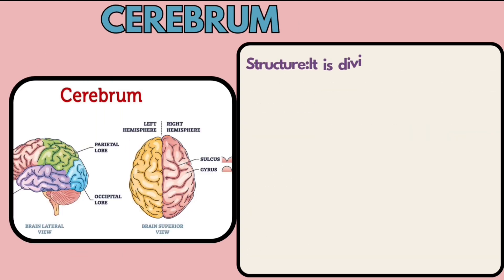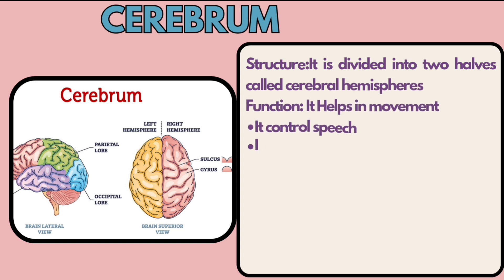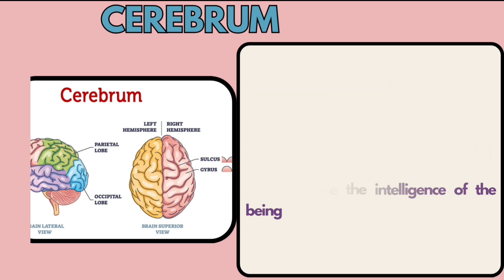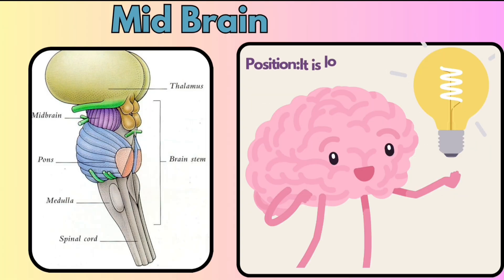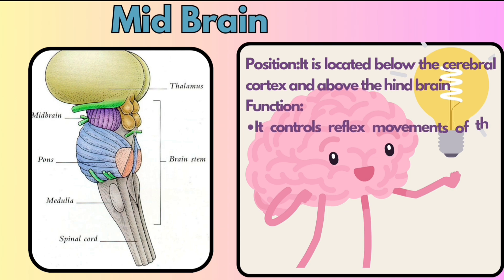The cerebrum is divided into two halves called cerebral hemispheres. Its functions are: it helps in movement, controls speech, is responsible for sensory processing, and determines intelligence. The midbrain is located below the cerebral cortex and above the hindbrain.